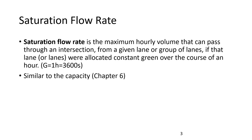The saturation flow rate assumes we have a constant green light for an entire hour — 3,600 seconds of green time. Obviously that's never going to happen at a traffic signal, but that's our theoretical maximum flow rate. We compare everything on an hourly basis, so that's our flow rate — it's not the actual flow that would come through there.